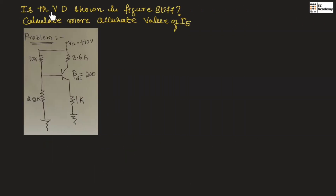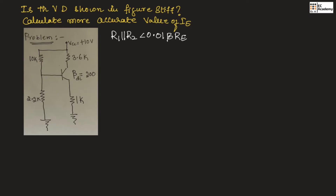Now let us consider a problem where a voltage divider bias circuit is given and we need to find whether this voltage divider bias is a stiff voltage divider or not, and then calculate the more accurate value of the emitter current. The condition for stiff voltage divider is R1 parallel with R2 should be less than 0.01 beta times RE.